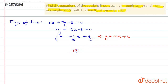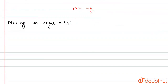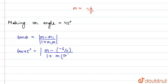The slope is m = -6/5, and the angle being made is 45 degrees. The slope of the other line can be found using the angle between two lines formula: tan(θ) = |( m - m₁) / (1 + m₁·m)|. So tan(45°) = |(m - (-6/5)) / (1 + m·(-6/5))|.